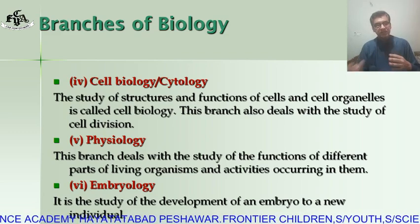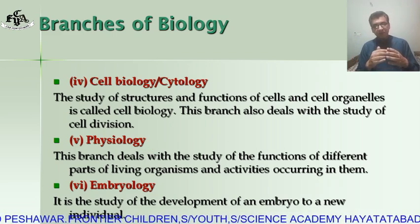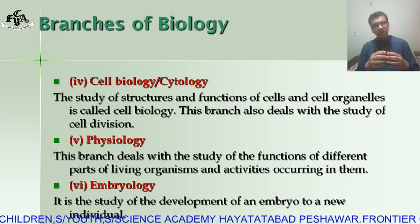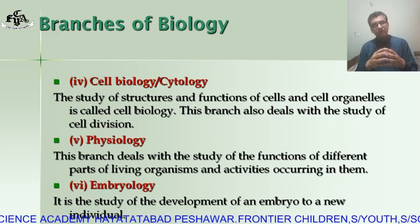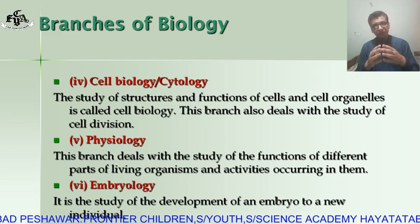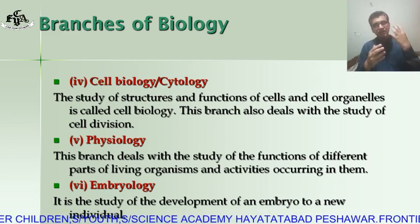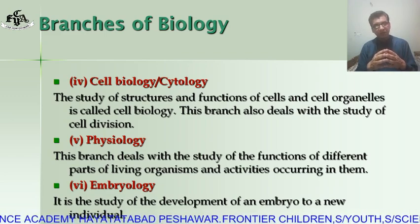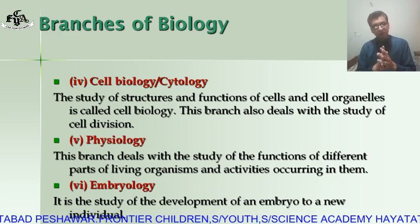The next branch is physiology. In this branch, we study the functions of different parts of living organisms and the different activities that occur in them. For example, in morphology we study the structure of the human eye, whereas in physiology we study the function of the human eye — how an image is formed on the retina. So physiology deals with the functions of different parts of the body.